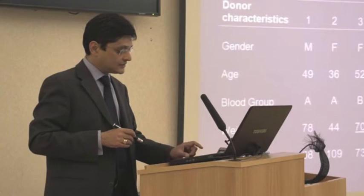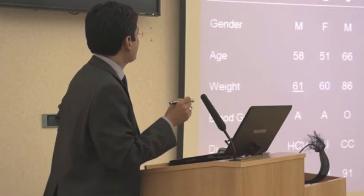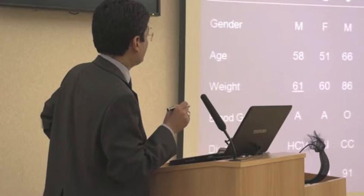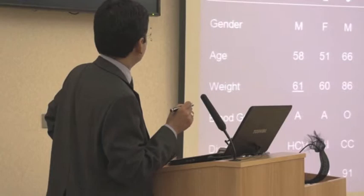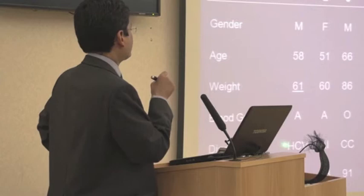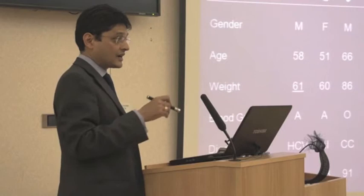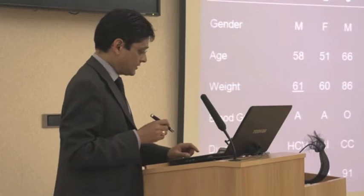Looking at the characteristics of the recipients, there were more women than men who received the domino livers. Most were above 50 years of age — only one was under 50, at 43. The median age was 57 years, median weight 61 kilograms, with different blood groups. All recipients had advanced liver cirrhosis, and most had developed liver cancers on the background of cirrhosis. The median time on the waiting list was 33 days.